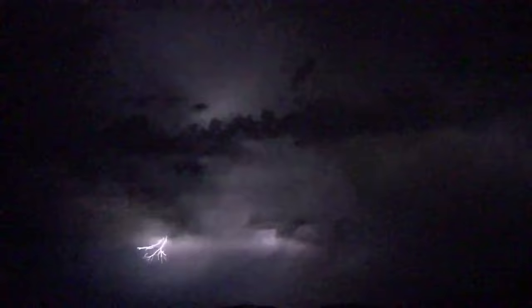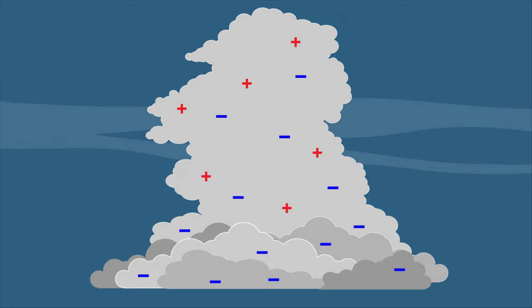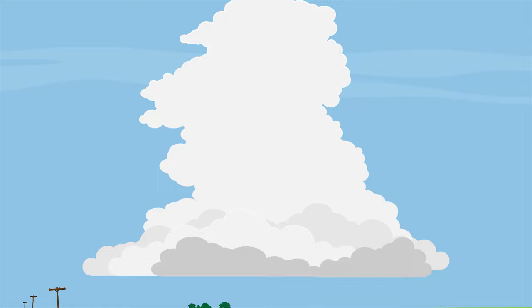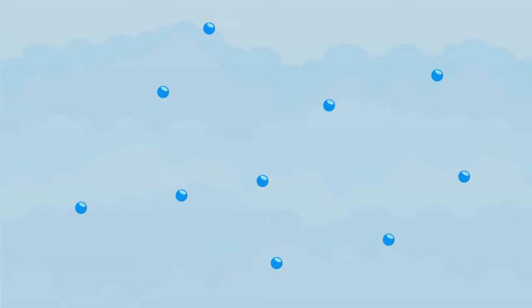Lightning comes from electrical charges that build up within a storm cloud. Thunderstorms form when warm, moist air rises high into the atmosphere. This rising air is called an updraft. As air rises in the atmosphere, clouds form when water vapor in the air cools into water drops called cloud droplets.